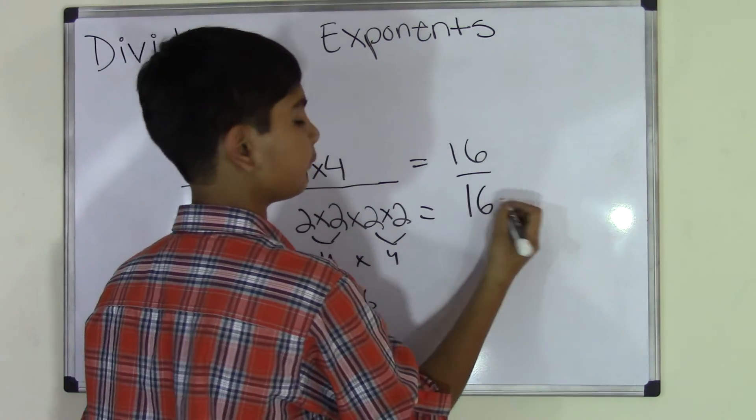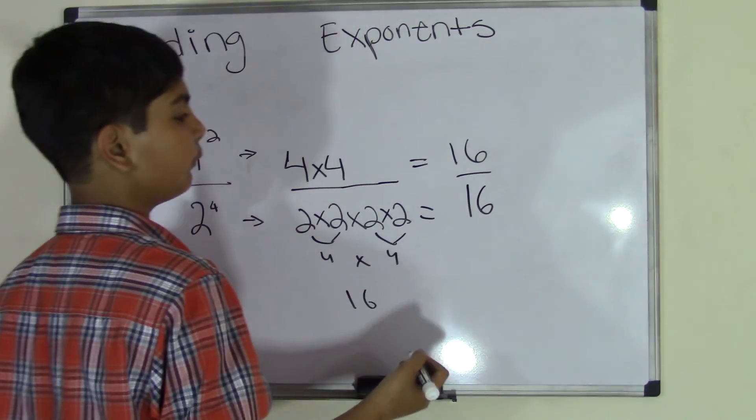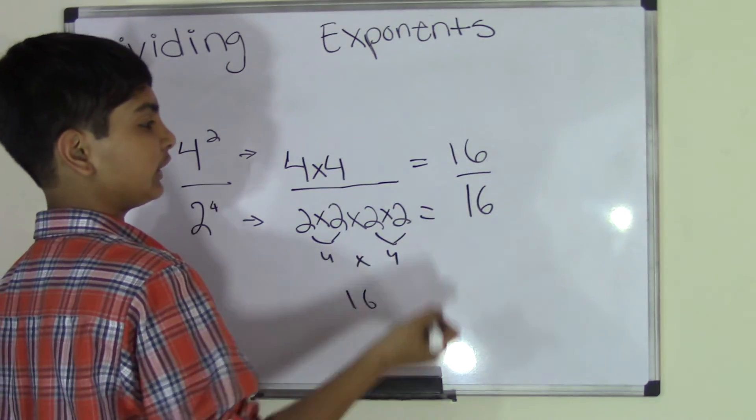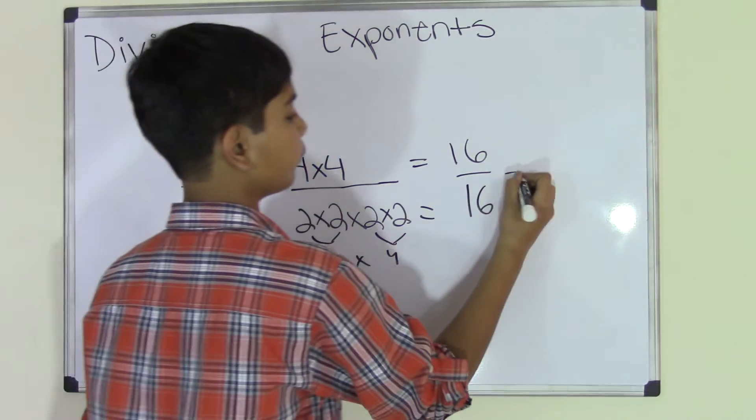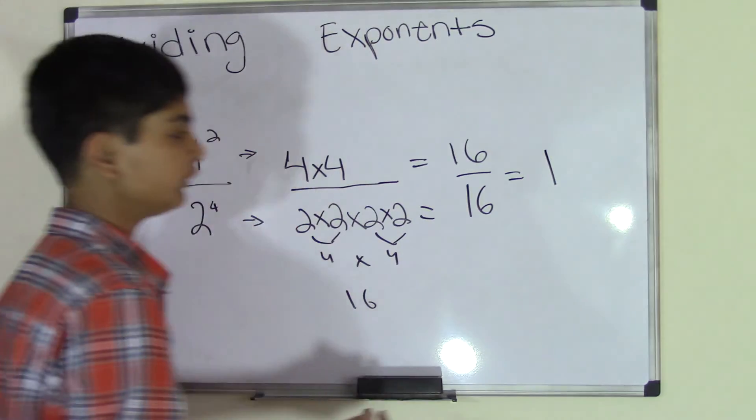So we get 16 upon 16. Now we know that any fraction that has the same numbers on top and the bottom equals 1. So we get a quotient of 1.